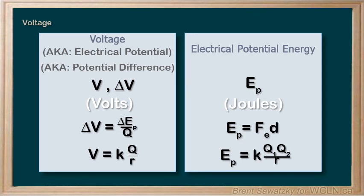So basically, electric potential energy and voltage are both useful and quite similar. They both relate to electric fields, whether a uniform electric field or a field from a point charge. The difference is that electric potential energy depends on the charge of the object at the given position, where voltage does not.